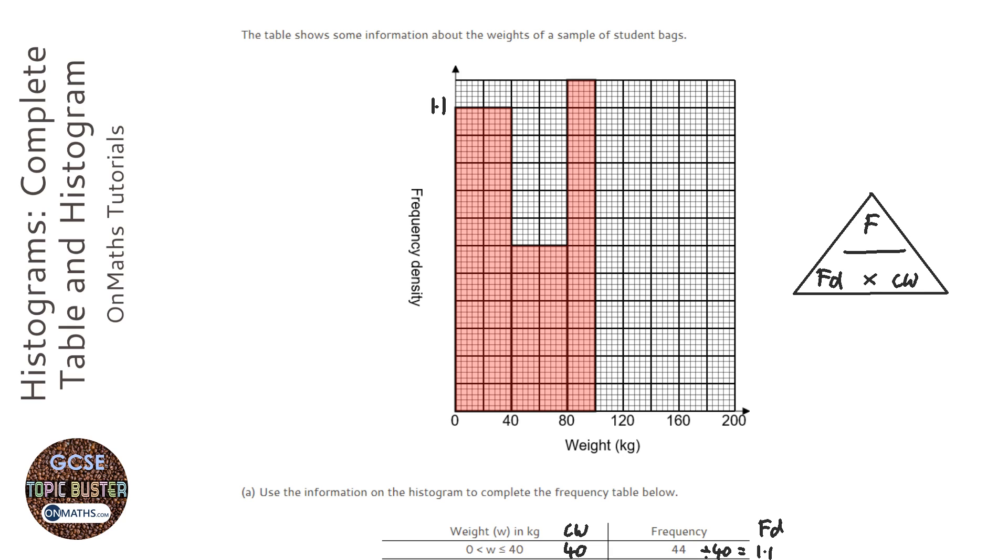well I notice that that's going to be 1.0, 0.8, 0.6, 0.4, 0.2 and 0. So it works perfectly, and then obviously 1.2 at the top.